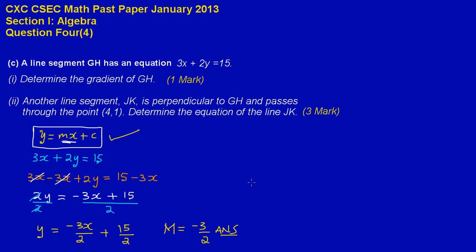Now in part 2, they're stating that another line segment JK is perpendicular to GH and passes through the point (4, 1). They're asking us to determine the equation of the line JK — that's an easy 3 marks. I'm just going to point out a few very important notes. If a line is perpendicular to another line, then the gradient is the negative reciprocal of that line.